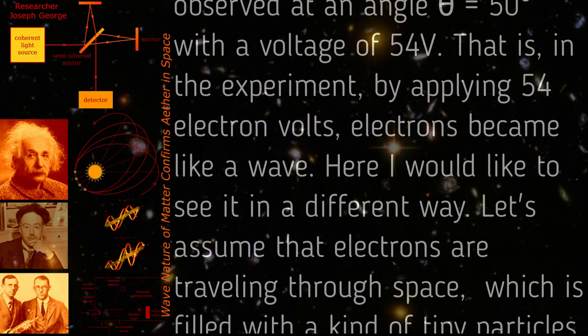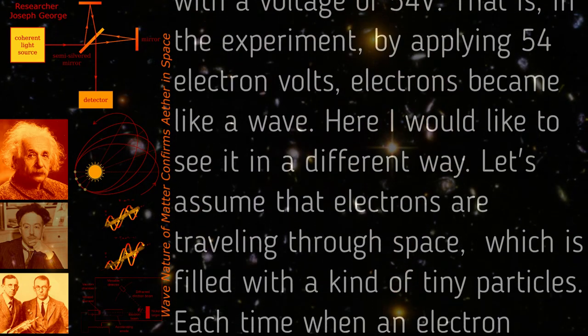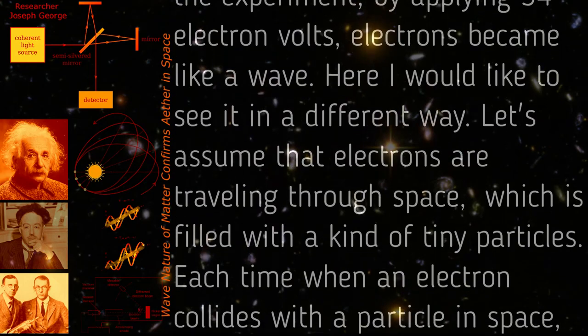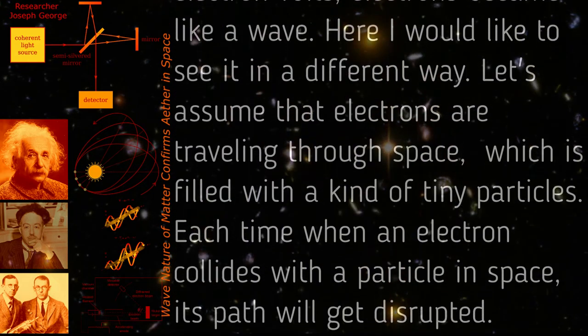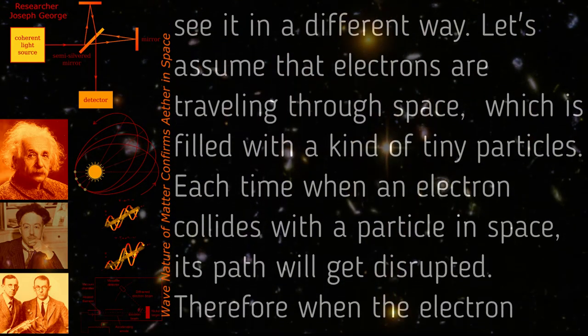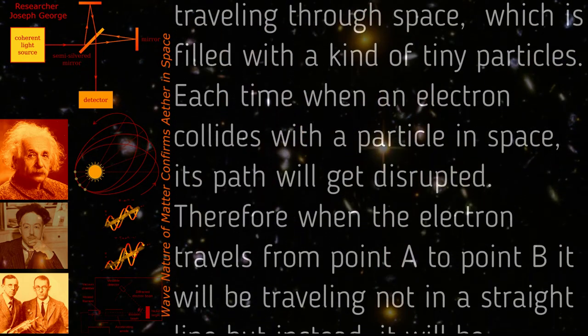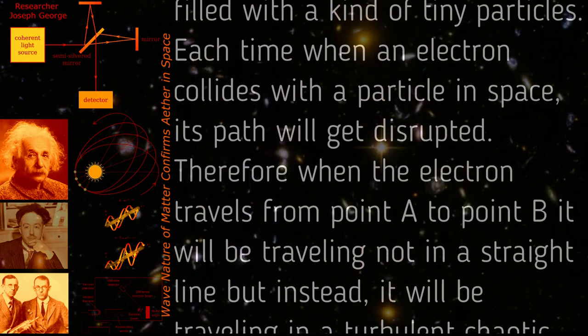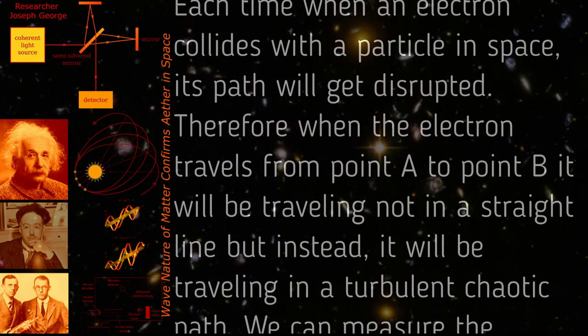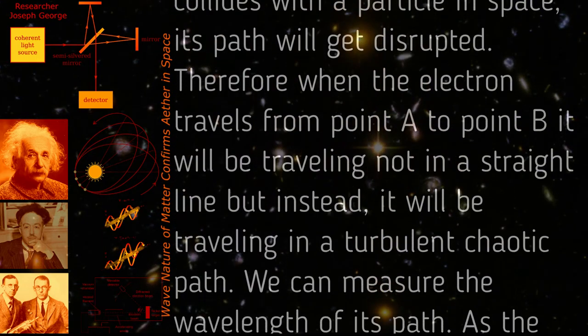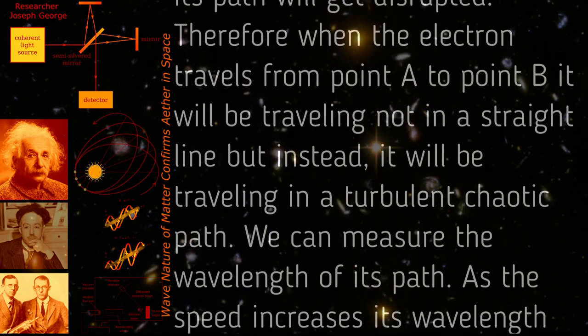Let's assume that electrons are traveling through space which is filled with a kind of tiny particles. Each time when an electron collides with a particle in space, its path will get disrupted. Therefore, when the electron travels from point A to point B, it will be traveling not in a straight line but instead it will be traveling in a turbulent chaotic path. We can measure the wavelength of its path.